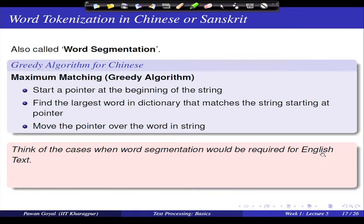The simplest algorithm for word segmentation is the greedy maximum matching algorithm. Given a string and a dictionary, you start at the beginning, find the longest dictionary match, break there, then move the pointer to the next character and repeat. This greedily selects words by taking the maximum match at each step, and works well for most cases.